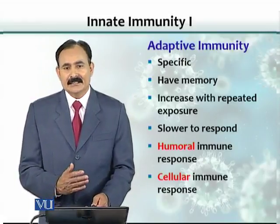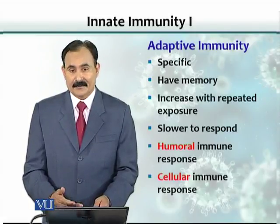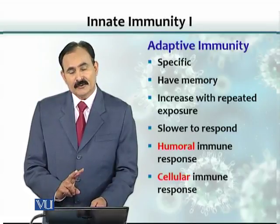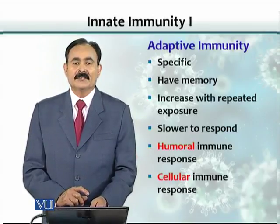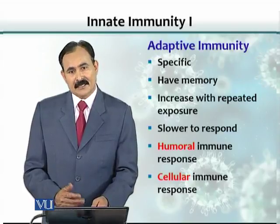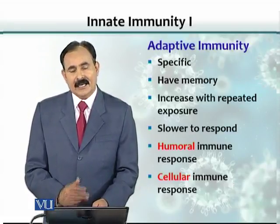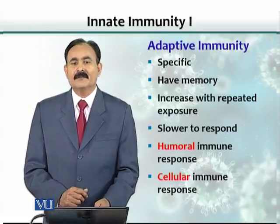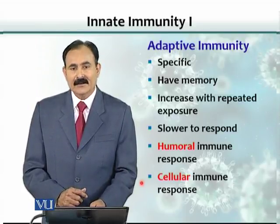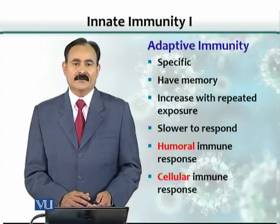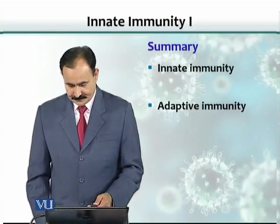Innate immunity responds very rapidly because it is always present. There are two sub-branches of adaptive immune response. One is called the humoral immune response, where antibodies are made by B lymphocytes. The other is cellular immunity, or the cellular immune response, which involves cells responsible for killing organisms or the cells that harbor them. So adaptive immune response has two branches: humoral and cellular.